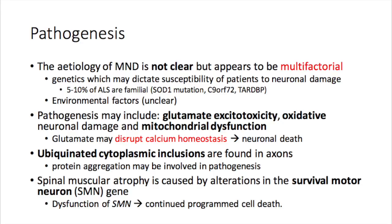The role of environmental factors is not clear. Pathogenesis may include glutamate excitotoxicity, oxidative neuronal damage, and mitochondrial dysfunction. Glutamate may cause increased availability and disruption of calcium homeostasis, which then leads to neuronal death.